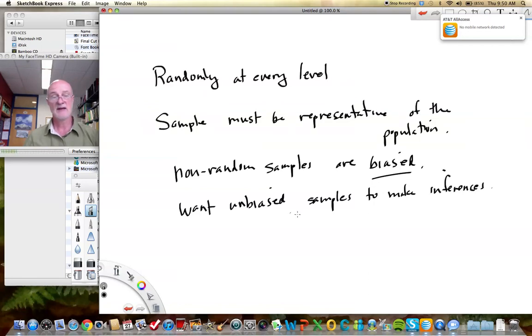We want unbiased samples in order to make inferences. Because if we use biased samples, our inferences will be biased. They will be, in a sense, wrong, incorrect, in that they are not random samples. All of our assumptions are that we have sampled randomly at the lowest level.